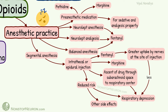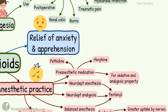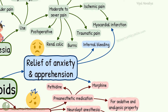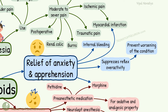Coming to relief of anxiety and apprehension: morphine is used for this. It is beneficial in patients with internal bleeding and myocardial infarction. In myocardial infarction it benefits in two ways — by relieving pain as well as relieving anxiety and apprehension, which suppresses reflex overactivity and thereby prevents worsening of the condition.